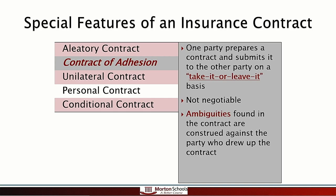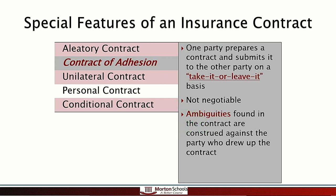Also on the test, if you see the term ambiguity or ambiguous — something that's not clear — if there's something unclear in a contract of adhesion and there's a lawsuit, the party that prepared the contract loses. In this case, that's the insurance company. They make sure everything in that contract is crystal clear about what's covered and what's not. For test purposes: if you see the word ambiguous or ambiguities in a question, the correct answer is going to be adhesion.